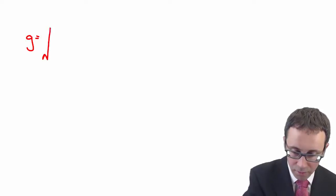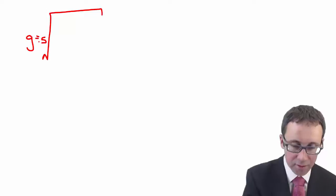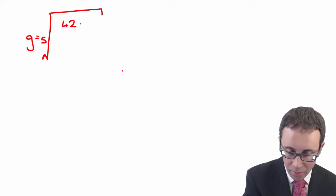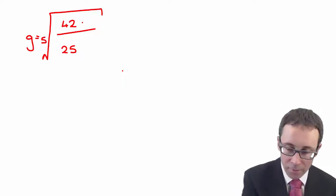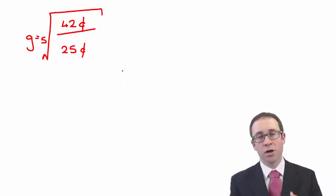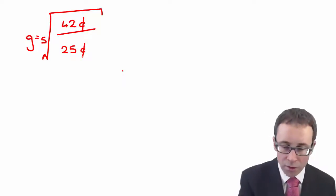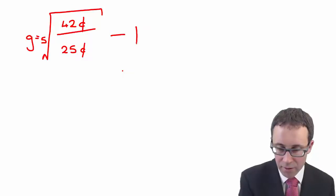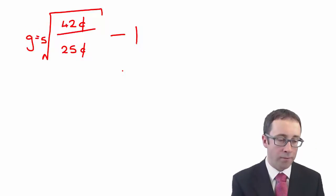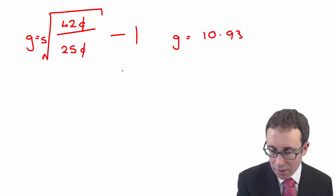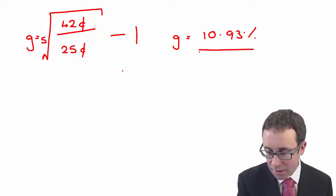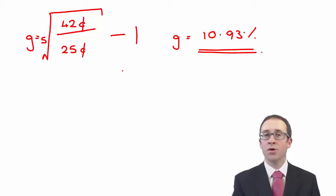To work out the growth rate, we take the fifth root — since N is five — of 42 cents divided by 25 cents. I've kept cents on top and bottom; you could use dollars — it doesn't matter. Once you've worked out the fifth root of that figure and subtract one, that gives you a growth rate of 10.93%.